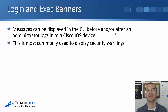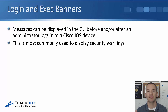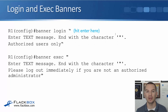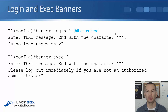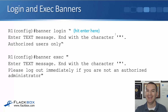First thing to cover is login and exec banners. Messages can be displayed in the command line before and or after an administrator logs in to the IOS device, and this is most commonly used to display security warnings. For before the login, that is the login banner. To configure that, at global config, you say 'banner login' and then you put in a delimiter such as a quote. Then you hit enter and the router will give you feedback saying 'enter your text message, end with the character' — the same delimiter that you used.